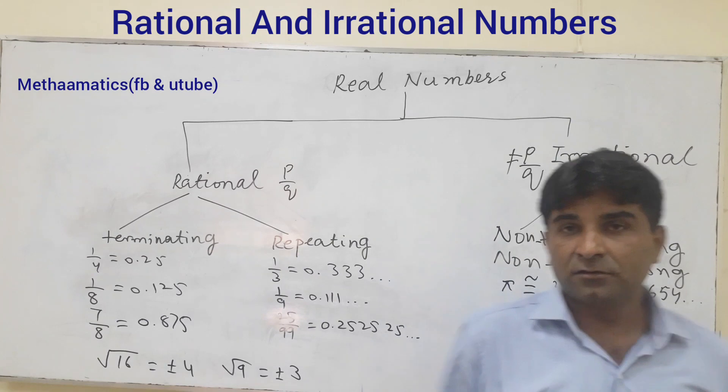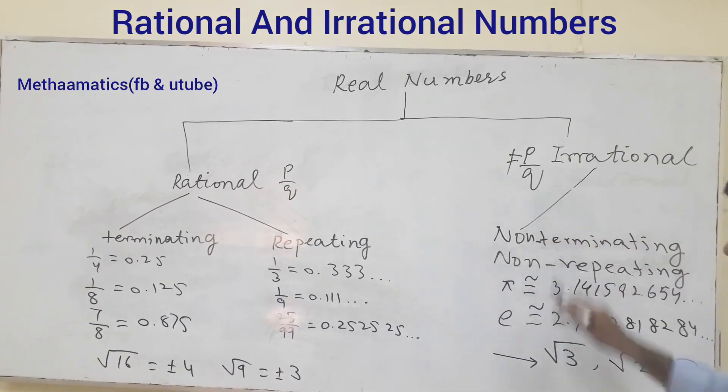In irrational numbers, when you find the square root of a number which is not a perfect square, you will get an irrational number. For example, square root of 3, this is not a perfect square. So you will get a number which will be like these numbers, irrational numbers, neither repeating nor terminating. Square root of 2, square root of 8.